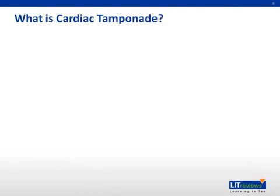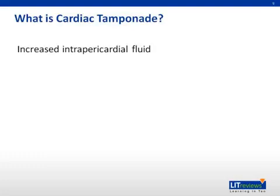So how does the pericardial effusion cause cardiac tamponade? Please note that these are not the same things. Tamponade is actually an urgent or emergent condition that can lead to cardiogenic shock and impair the heart's ability to pump blood to the rest of the body. It is due to a very large or rapidly accumulating pericardial effusion that impairs the heart's ability to fill. As fluid accumulates in the pericardial space, it forces the pericardial membrane to stretch.